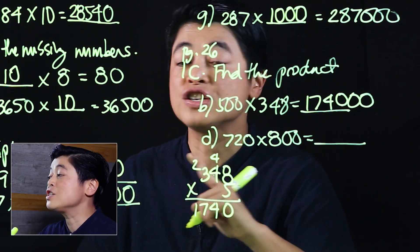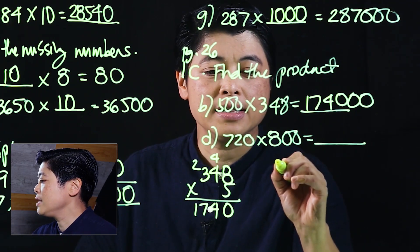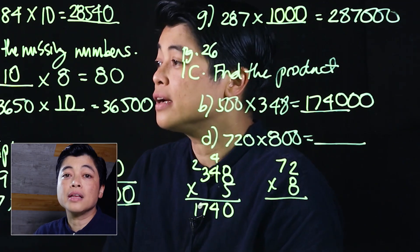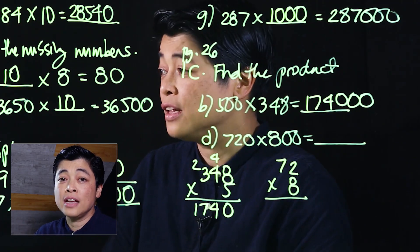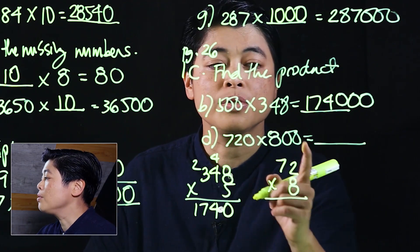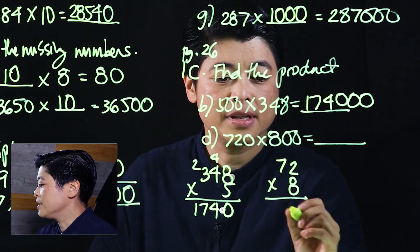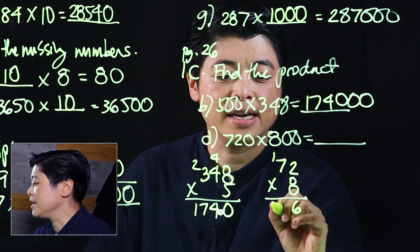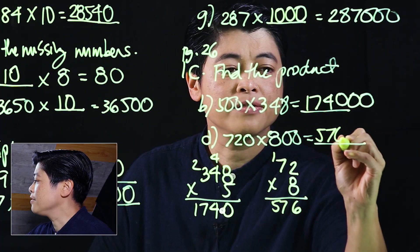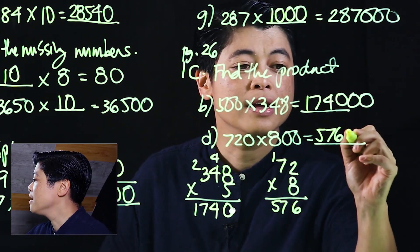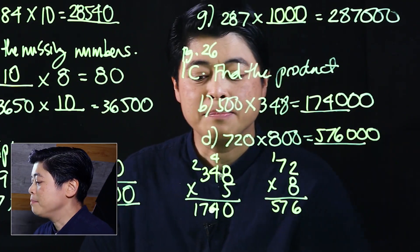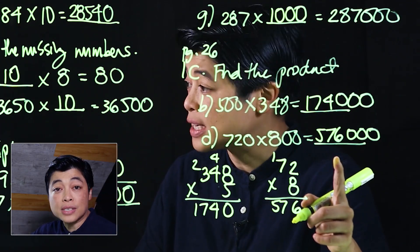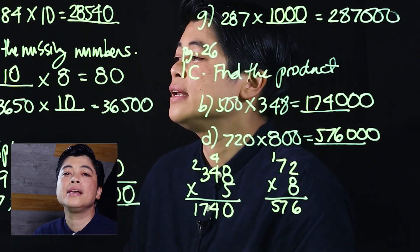We take 72 times 8, take the product of that, and in the end add the three zeros. This is 16, 56 plus 1 is 57, so that's 576 with three zeros, making our product 576,000.